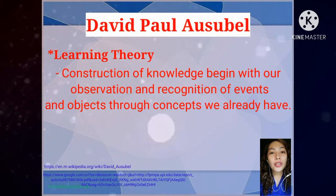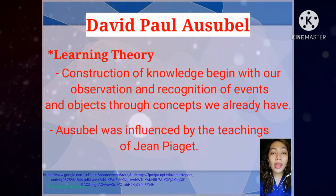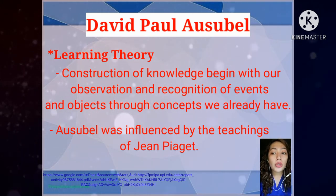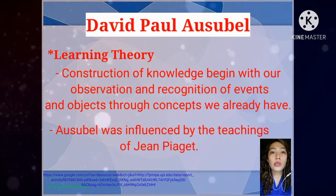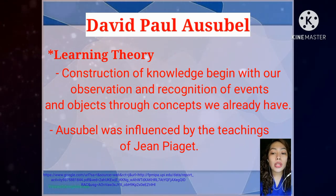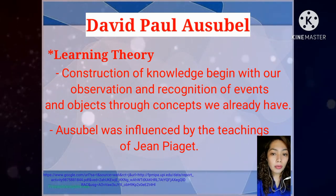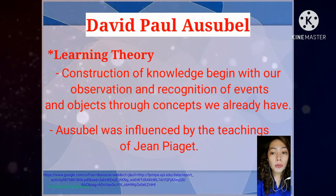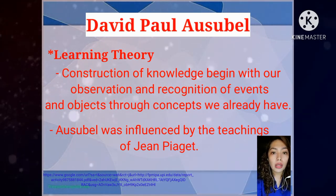Ausubel believes that the learning of new knowledge relies on what we already know. That is, construction of knowledge begins with our observation and recognition of events and objects through concepts we already have. Ausubel also stresses the importance of reception rather than discovery learning, and meaningful rather than rote learning. Ausubel was influenced by the teachings of Piaget. Similar to Piaget's idea of conceptual schemes, Ausubel related this to his explanation of how people acquire knowledge.